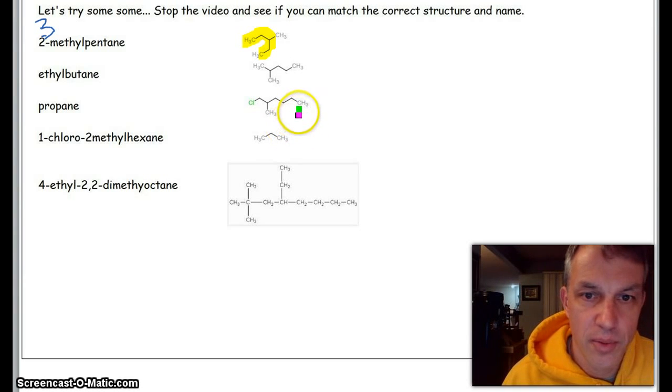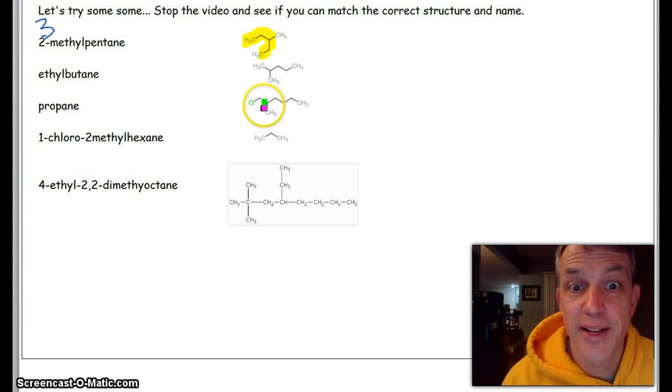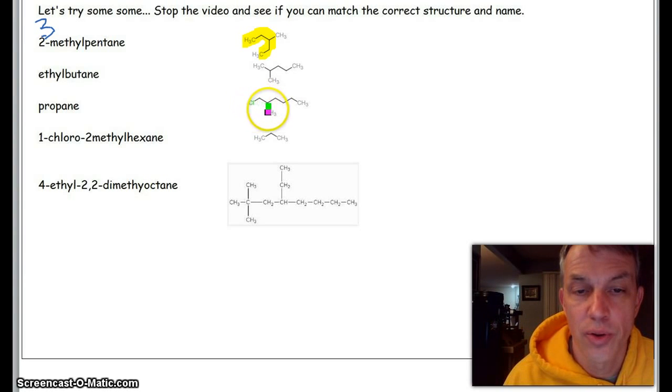We had 3-methylpentane and 2-methylpentane. This one right here, let's see if we can figure out what this one is. One, two, three, four, five, six—so we know there's a hexane. First change is right here, so that's 1-chloro-2-methyl, and those are in alphabetical order. So 1-chloro-2-methyl. Three carbons right here—that's propane.